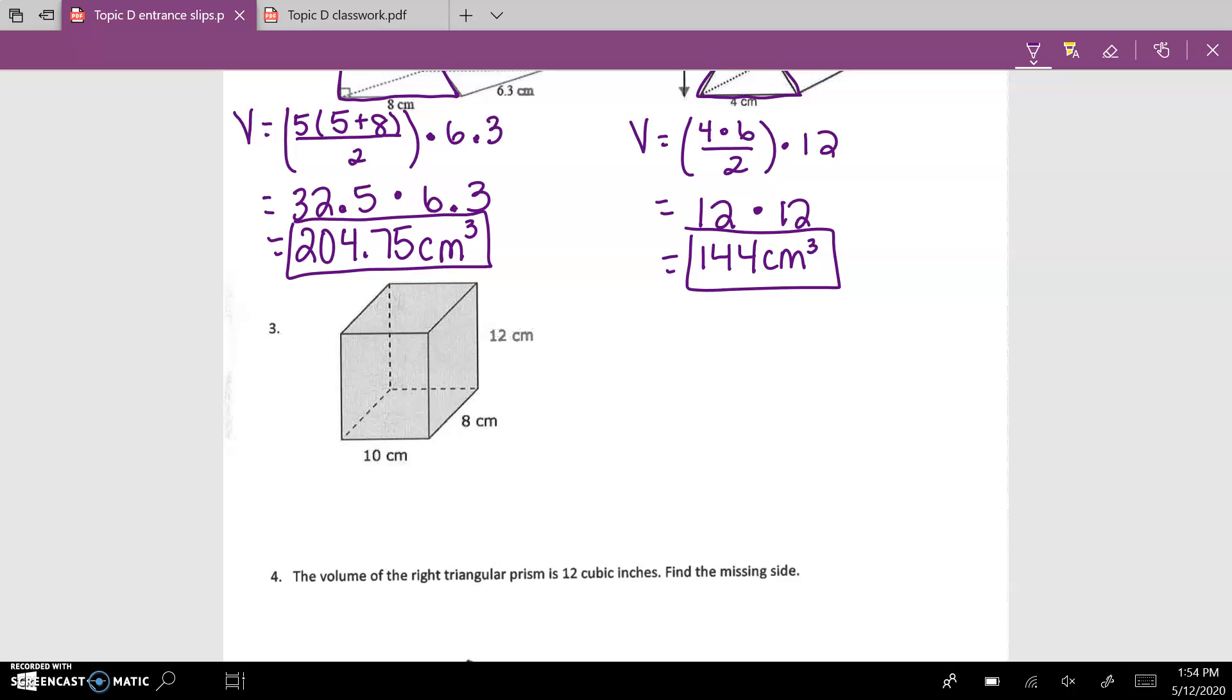The next one, I've got a rectangular prism. For this one, you could do the base as any of these rectangles. I ended up using this one that's on the bottom. Area of the base is length times width, so 10 times 8, times the height, which is 12.